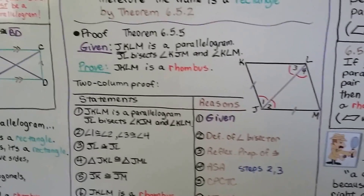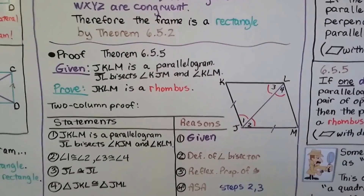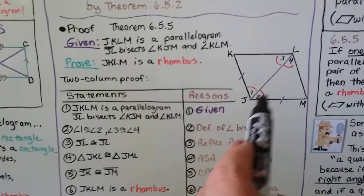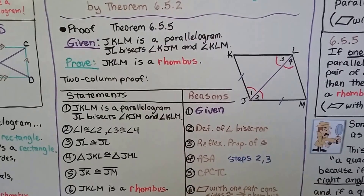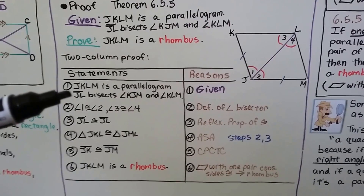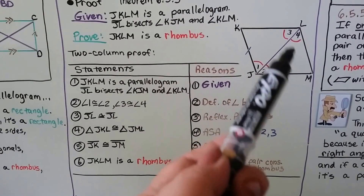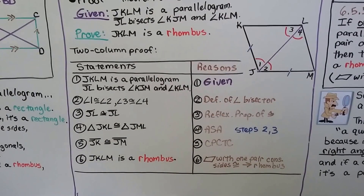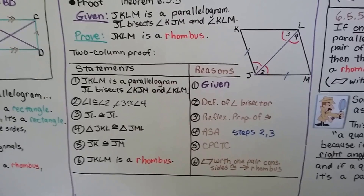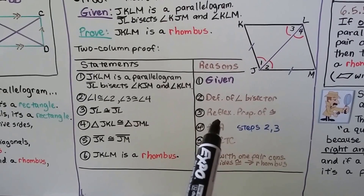We have a two-column proof for Theorem 6.5.5 — the one with the diagonal bisecting opposite angles. Given: JKLM is a parallelogram, and JL bisects angle KJM and angle KLM. We need to prove JKLM is a rhombus. Statement 1: given. Statement 2: angle 1 is congruent to angle 2, and angle 3 is congruent to angle 4, by definition of angle bisector. Statement 3: segment JL is congruent to segment JL by the reflexive property of congruence.